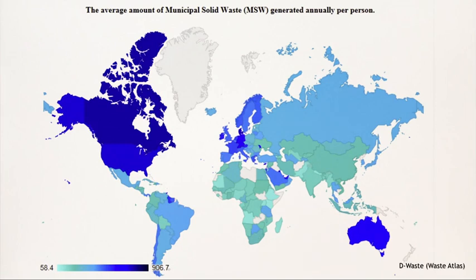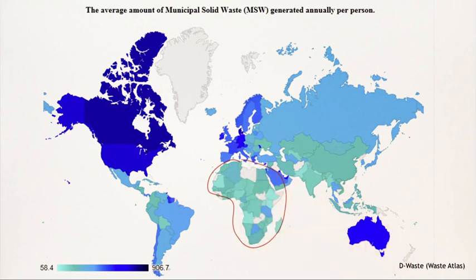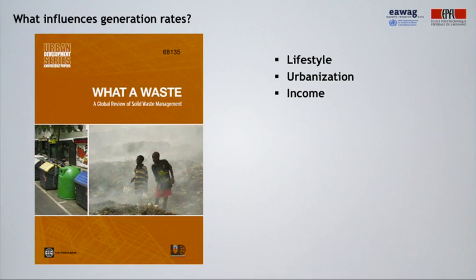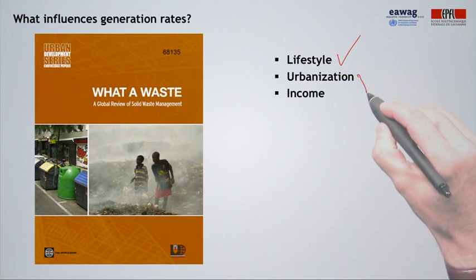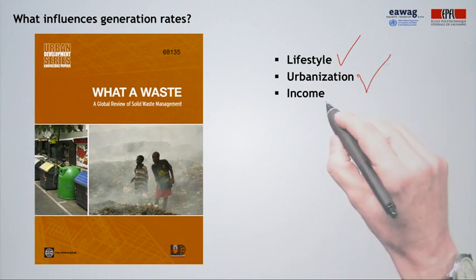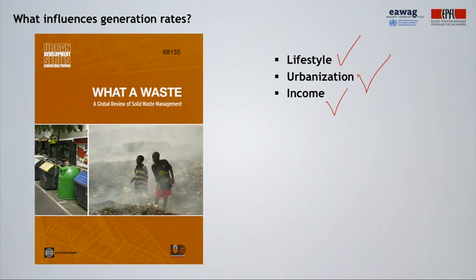Another way of showing this is on the global map, shown with different colors — low waste generation and high waste generation in a darker blue. The African subcontinent generally has low waste generation rates per person, and South Asia also has quite low generation rates. What influences generation rates? The evidence is not entirely clear, but what is certain is that lifestyle, degree of urbanization, and income level are key factors. For example, people who tend to eat outside their home tend to generate less waste at their house — a typical phenomenon of lifestyle.